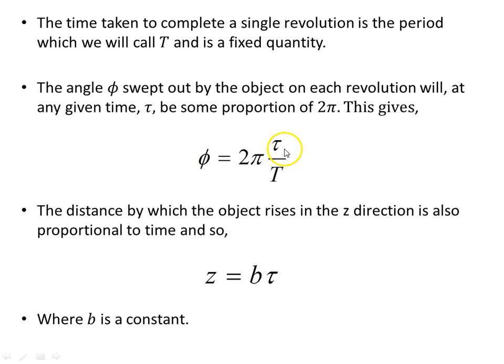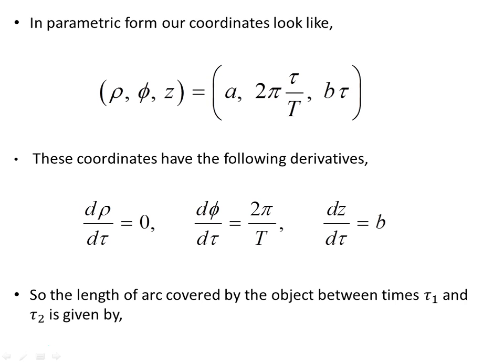So that's how phi is related to the parameter tau, which measures the time carried by a clock that the object carries with its own clock as it goes around the path. The distance by which the object rises in the z direction is also proportional the time, and so we're going to have z will be b, some constant b times tau.